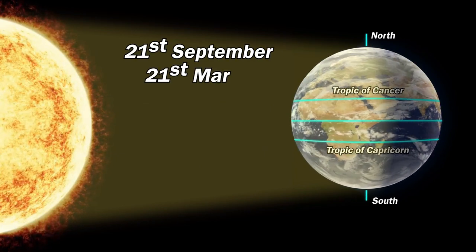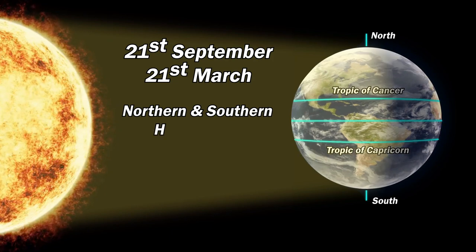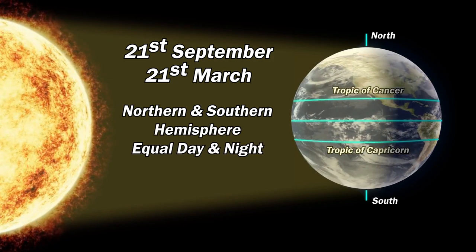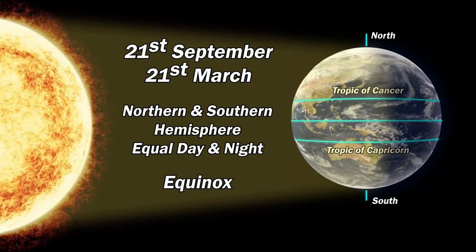Incidentally, on 21st of September and 21st of March, the duration of both day and night becomes equal for both hemispheres. As the equator gets directly in front of the sun, this phenomenon is called as equinox.